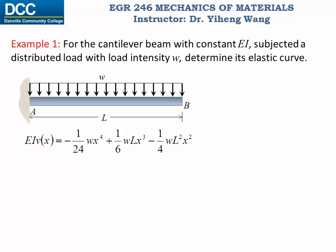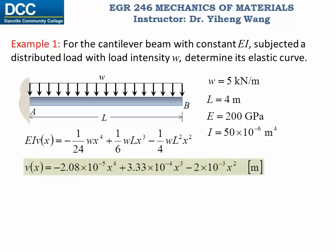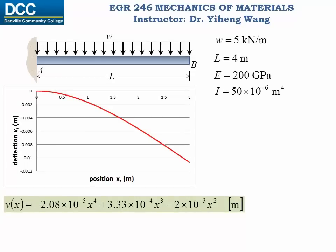With C1 = C2 = 0, our final elastic curve equation is determined. Substituting the given parameters — load intensity w = 5 kN/m, total length L = 4 m, Young's modulus E = 200 GPa, and area moment of inertia I = 50 × 10⁻⁶ m⁴ — into the equation gives the deflection function in meters. Plotting this function gives the elastic curve, which shows that the largest deflection occurs at the free end of the beam, approximately 0.01 m, or 10 centimeters.